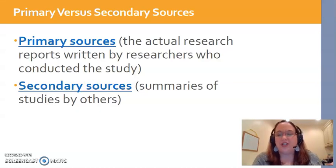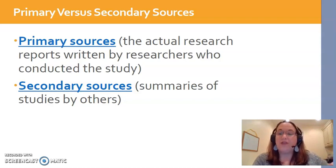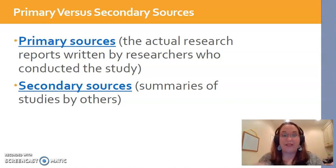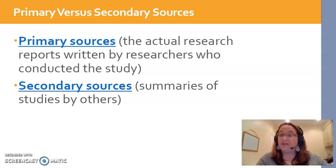Before we get into the search strategy, I do want to call your attention to a distinction between primary and secondary sources. Primary sources are articles that provide details of research studies, written by the researchers who actually did the research study. They do the study, then they write the manuscript and get it published. A secondary source, however, is a summary of studies that other people did. I could go out and write summaries about studies that other researchers did and publish that — that's considered a secondary source because I was not the researcher who did the study.